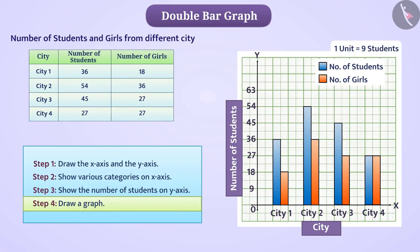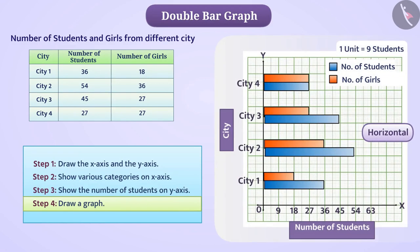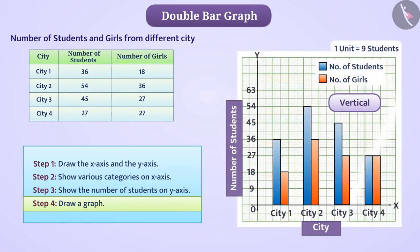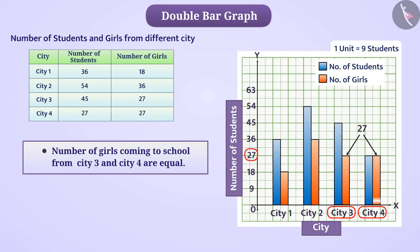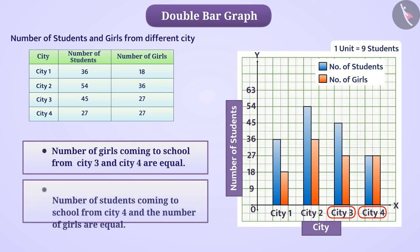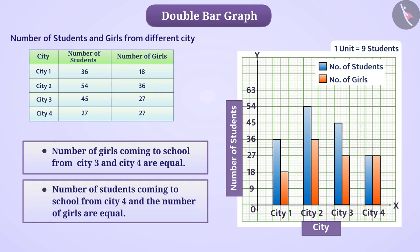Now, you can draw a double bar graph either horizontally or vertically. You can get various information from this double bar graph. For example, the number of girls coming to school from city 3 and city 4 are equal. In the same way, we can also get combined information like the number of students coming to school from city 4 and number of girls are equal.